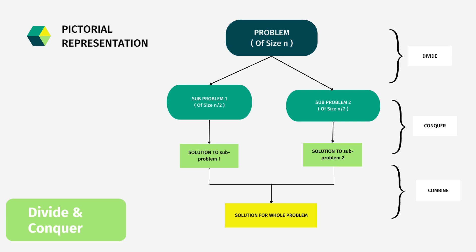In the pictorial representation, we start with a problem of size n. We divide it into sub-problems of size n/2. Then we find the solution for each individual sub-problem, and finally we combine the solutions of the individual sub-problems in order to get the solution for the original problem.